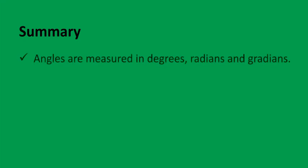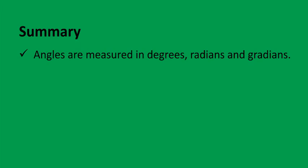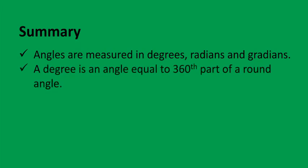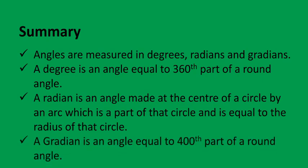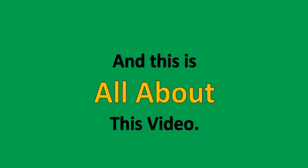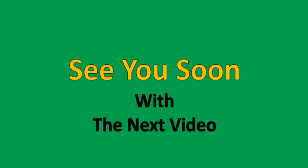Summary: Angles are measured in degrees, radians, and gradians. A degree is an angle equal to the 360th part of a round angle. A radian is an angle made at the center of a circle by an arc which is a part of that circle and is equal to the radius of that circle. A gradian is an angle equal to the 400th part of a round angle. And this is all about this video. See you soon with the next video. Thank you for being with me. Stay happy. Goodbye.